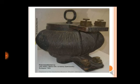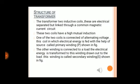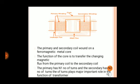This is the diagram of the first transformer. The transformer has two inductive coils that are electrically separated but linked through a common magnetic circuit. These two coils have high mutual induction. One of the coils is connected to an alternating voltage — this coil, in which electrical energy is fed from the source, is called the primary winding. The other winding is connected to a load; electrical energy is transformed to this winding and drawn out to the load — this is called the secondary winding. The primary and secondary coils share a ferromagnetic metal core, whose function is to transfer the changing magnetic flux from the primary coil to the secondary coil. The primary has N1 number of turns and the secondary has N2 number of turns. The number of turns plays a major role in the function of the transformer.